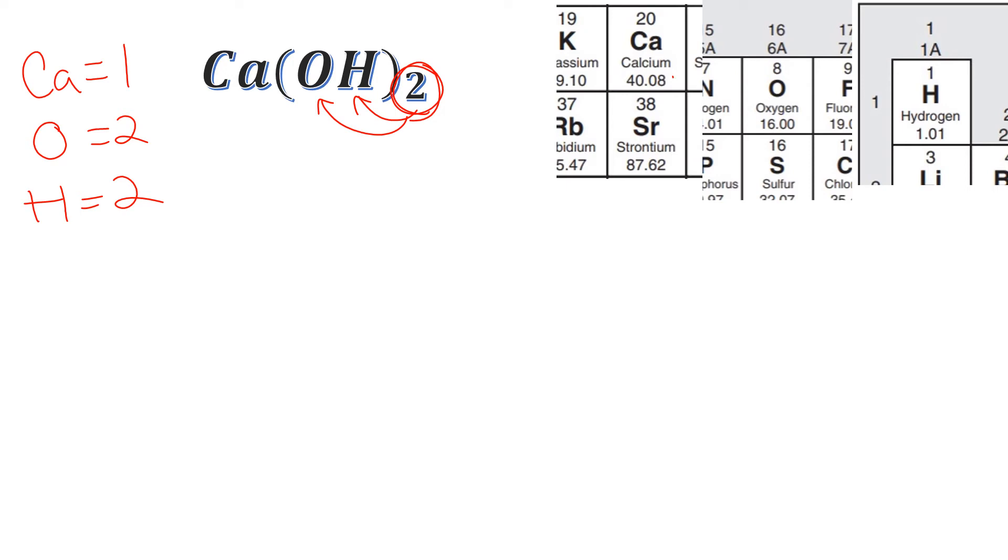So calcium, if I look up its mass, is 40.08. So I'm going to put that down. And we usually round it to the nearest tenth in chemistry. So we'll go 40.1. Oxygen is 16, but remember there's two of them. So that's two times 16, which is going to be 32. And remember, we're talking grams per mole here, so we'll be using grams.